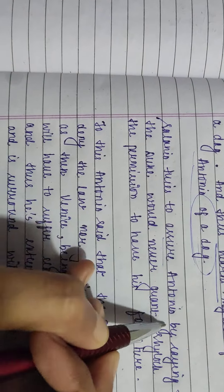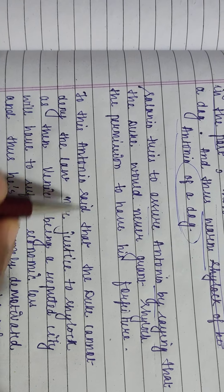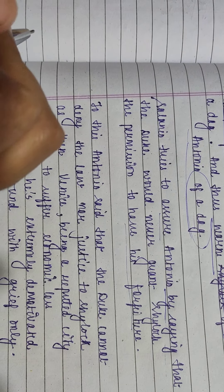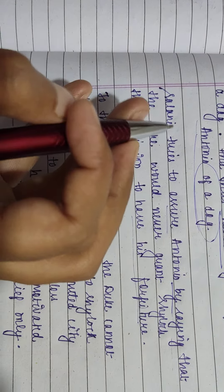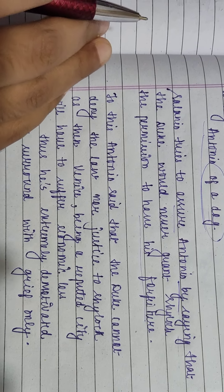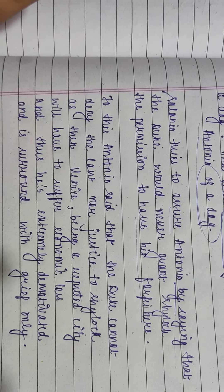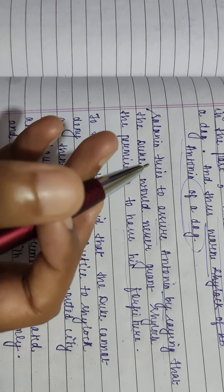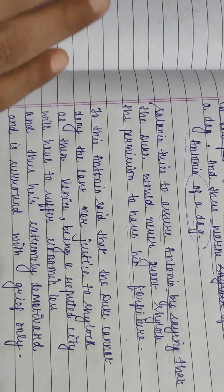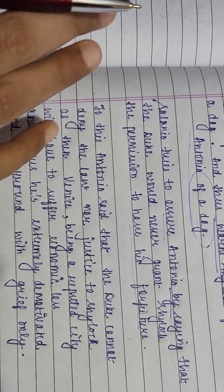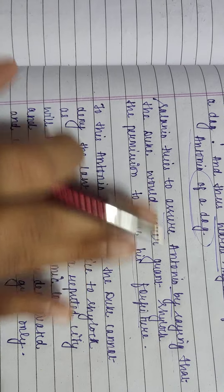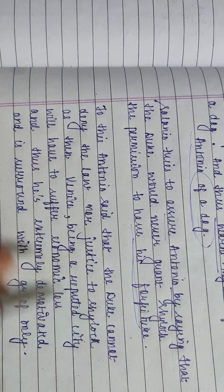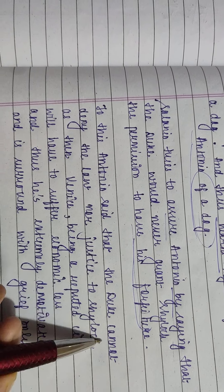Selenio tries to assure Antonio by saying that the Duke would never grant Shylock permission to have his forfeiture. But Antonio was very much afraid by seeing Shylock's behavior towards him, and Antonio was also very sure that he would have to lose his life because of his financial crisis. So Selenio tries to sympathize with him and convince him that everything will be all right and the Duke would never grant permission to such a cruel forfeiture.